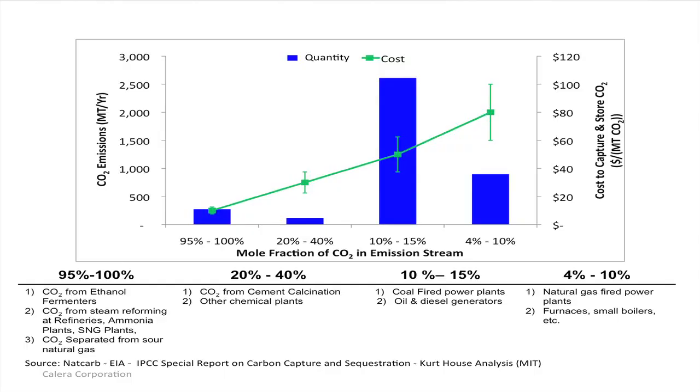When you combust coal, what comes out of the stack is about 10 to 15% carbon dioxide. Natural gas combustion from a natural gas plant is 4 to 5% carbon dioxide. Cement plants put out about 20 to 40% carbon dioxide. But looking at the quantity, most of the CO2 is coming from coal-fired power plants in the US, less from natural gas. The cost of actually extracting the CO2 gets much higher as it becomes more dilute.